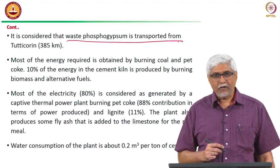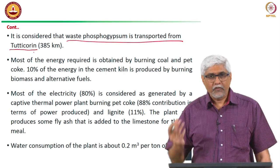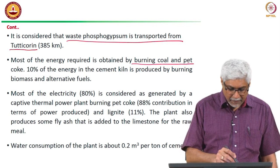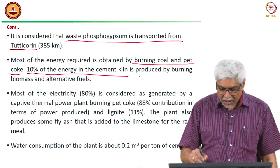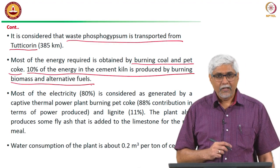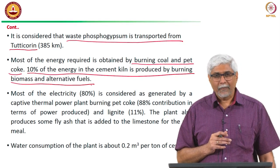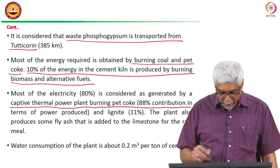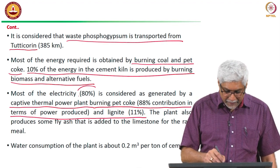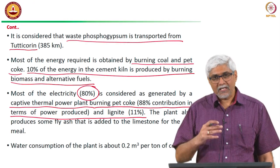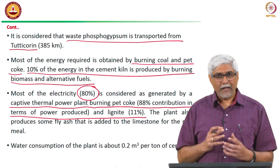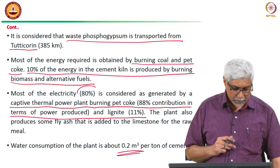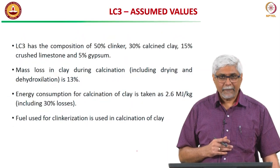This particular plant uses waste phosphogypsum from Tuticorin from the fertilizer industry. Most energy is obtained from burning coal and pet coke, with about 10% coming from biomass and alternative fuels. They have their own captive thermal power plant burning pet coke and lignite, providing 80% of the electricity required. There is also a small amount of water required for the cement manufacture.